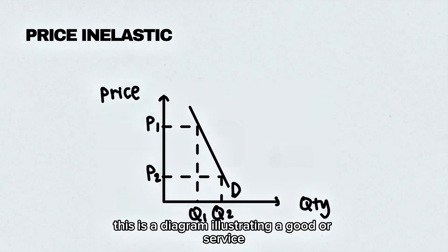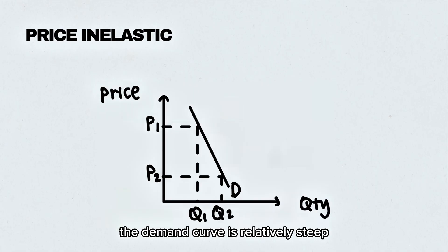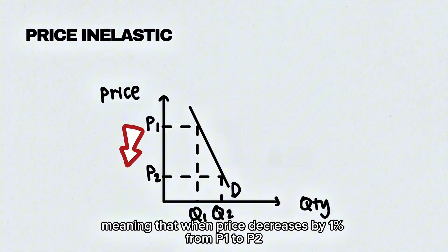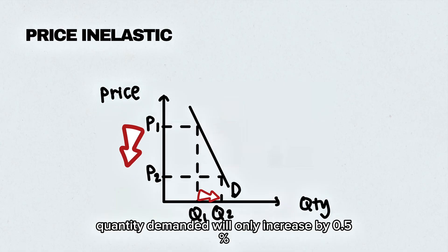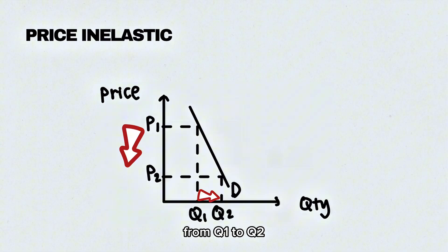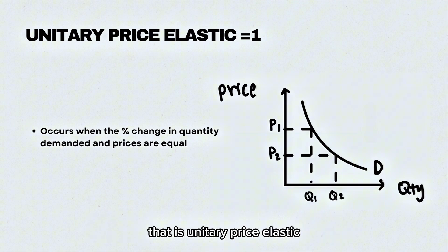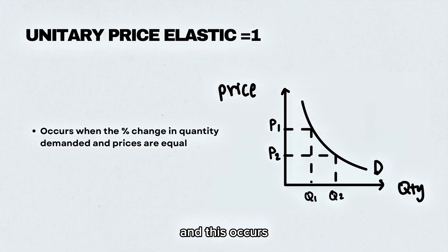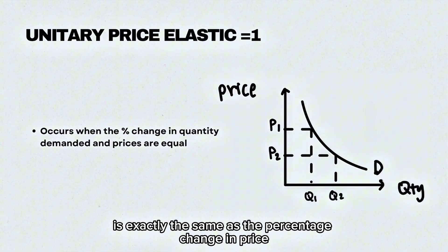This is a diagram illustrating a good or service that is price inelastic. As you can see, the demand curve is relatively steep, meaning that when price decreases by 1% from P1 to P2, quantity demanded will only increase by 0.5% from Q1 to Q2. This is followed by a diagram illustrating a unitary price elastic good or service, where the PED equals 1. This occurs when the percentage change in quantity demanded is exactly the same as the percentage change in price.